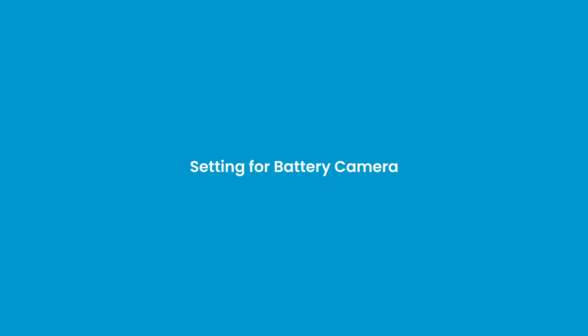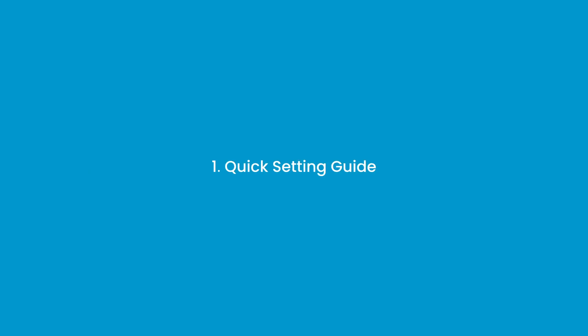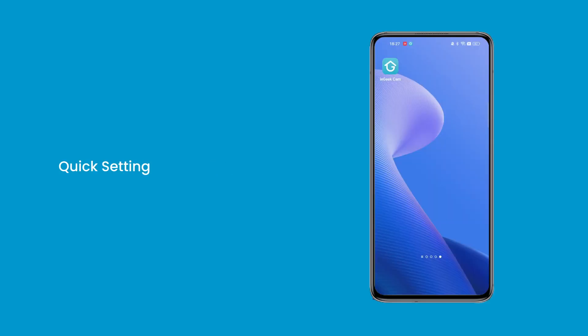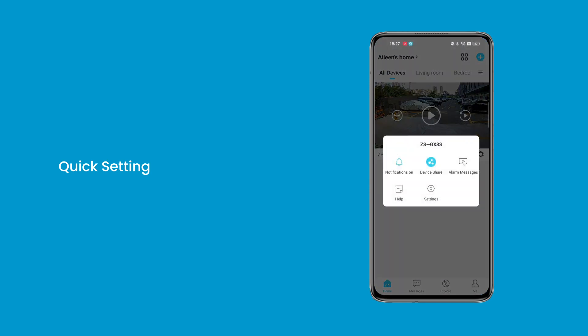Setting for Battery Camera — Part 1: Common Settings, Issues in Apps, Answers and Solutions. Question 1: Quick Setting Guide. When you need to set up quickly, you can click the Quick Navigation button here for expedited actions.